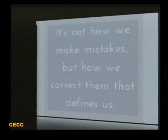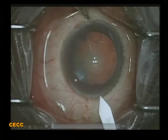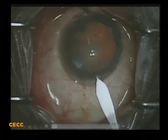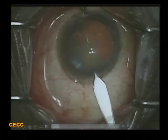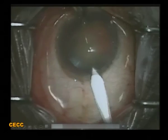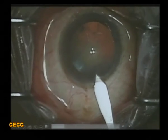We will see 10 videos and try to highlight at least one point we can take back home. This first case is a grade 3 cataract and we are trying to make a 2.2 keratome wound.